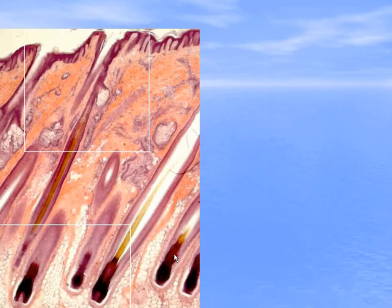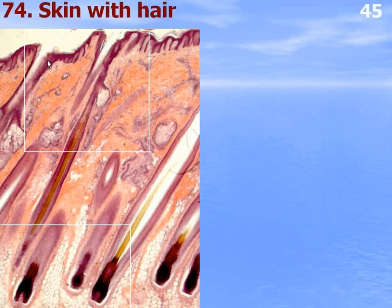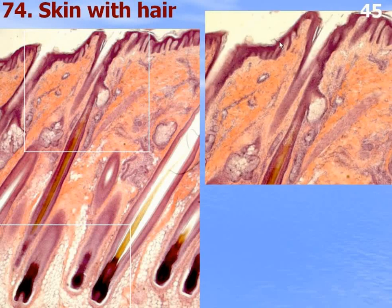Skin with hair — it's thin skin. The epidermis is very thin. There is also dermis and hypodermis — adipose tissue, also called subcutis. In thin skin, the epidermis consists of four layers.